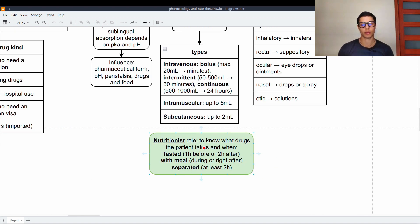The nutritionist role here is to know what drugs the patient takes and when. Because if we say that a patient needs a drug to be taken when fasted, that means one hour before eating or two hours after. With the meal, it's during the meal or right after the meal and separated from the meals must be at least two hours away from a meal.